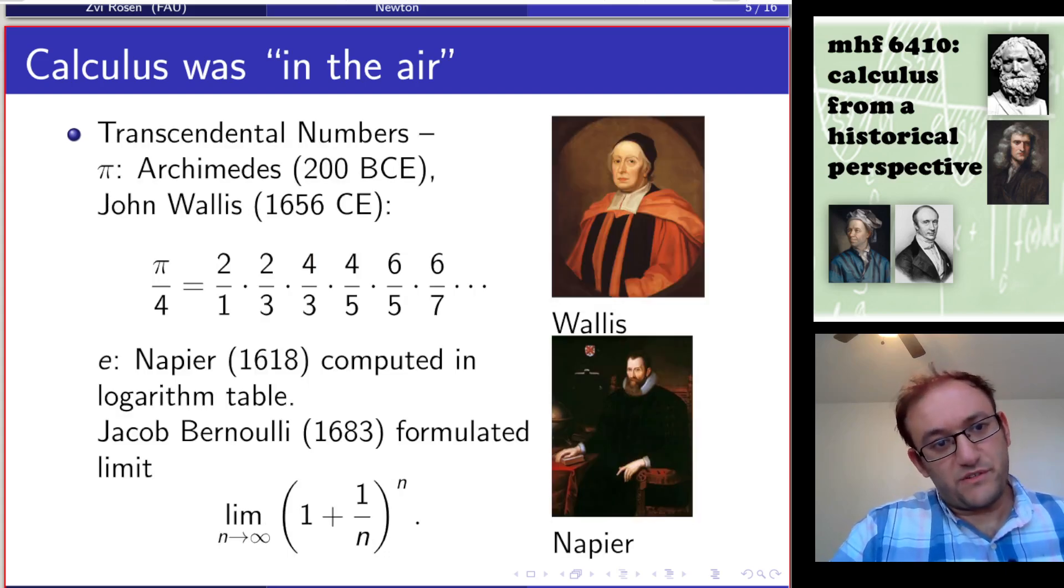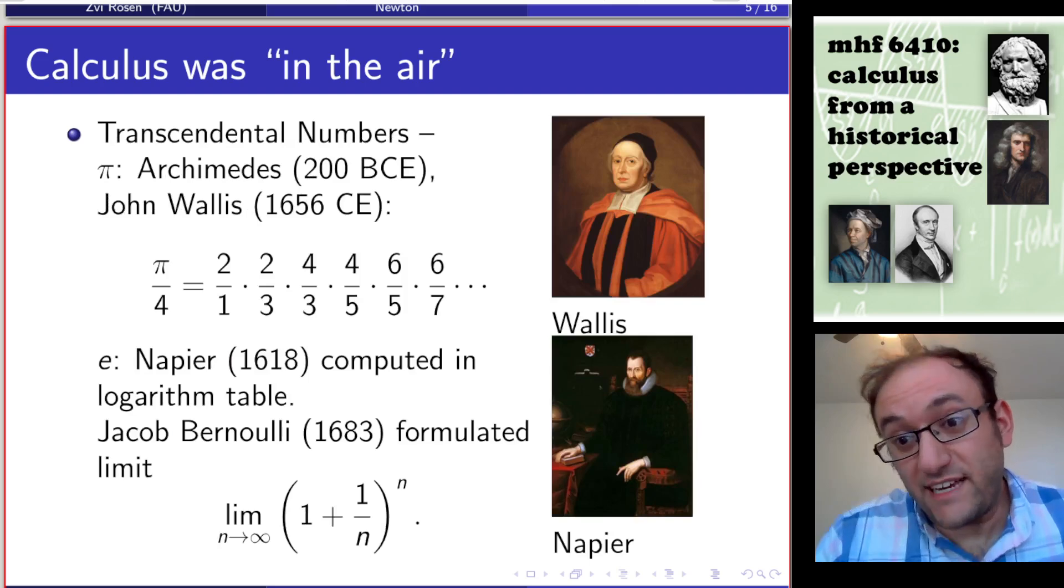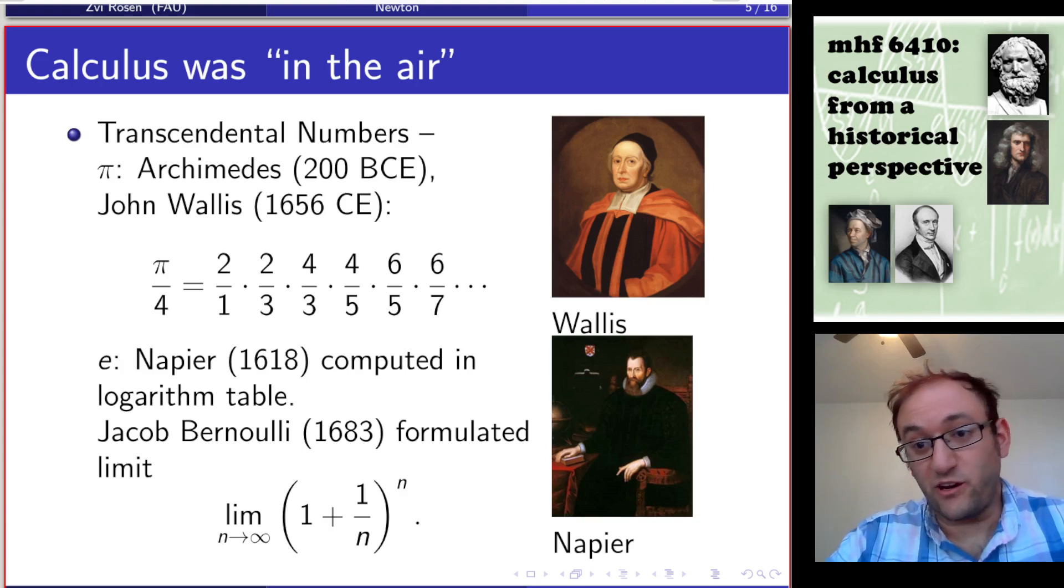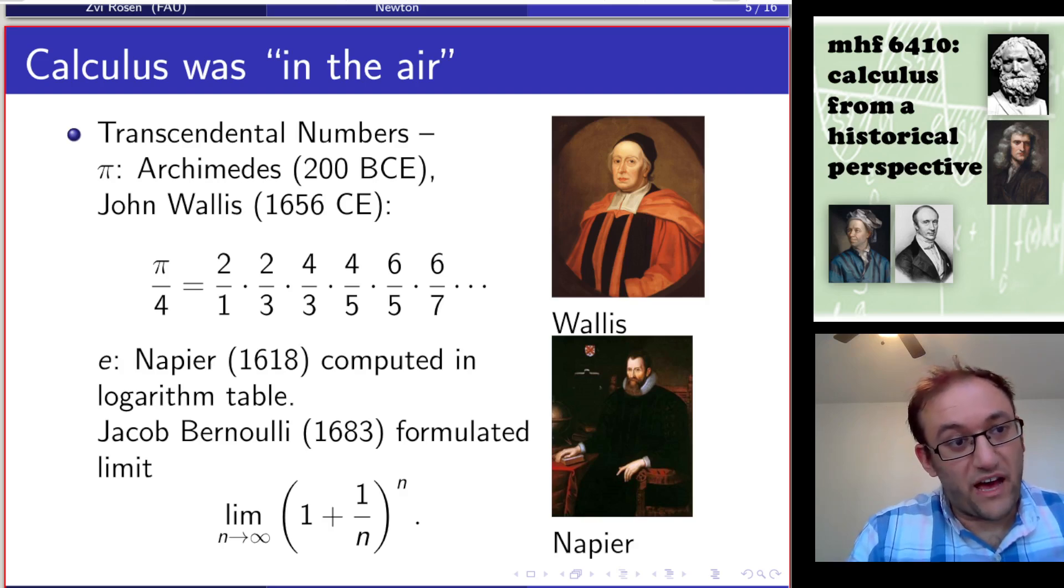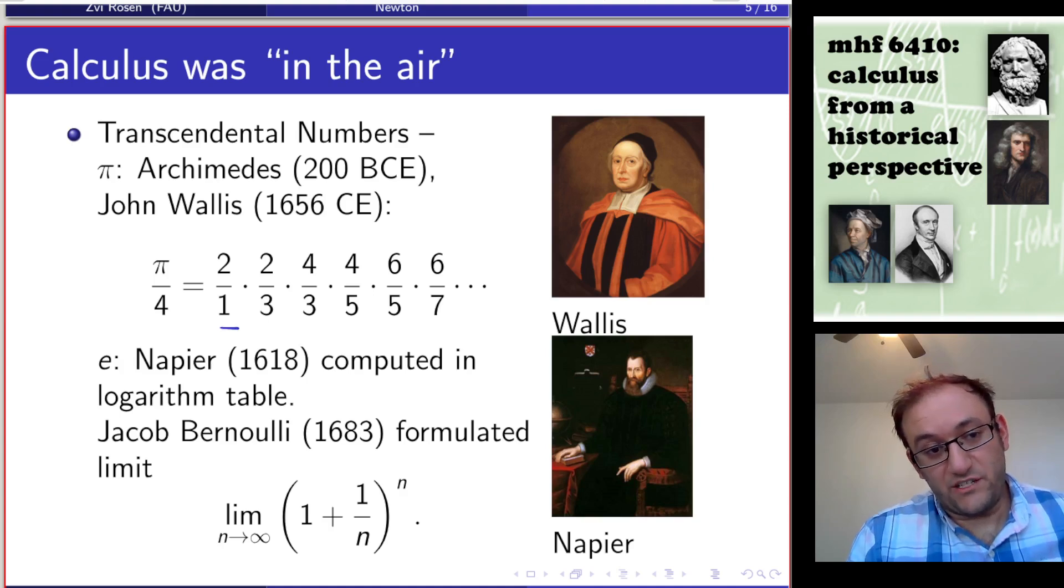How about transcendental numbers? Going back to antiquity again, people knew about pi. Archimedes had a way to estimate pi, as we showed in an earlier lecture. A lot of work had been done to get better estimates or infinite series or products that approach the value of pi. There's a famous product given from John Wallace in 1656, where you have an estimate for pi over 4 by products of 2 over 1 times 2 over 3. You take even integers in the numerator and odd integers on either side in the denominator.